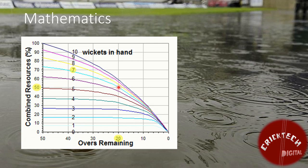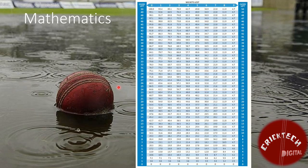The same equation is converted by a computer into a table of this sort for easier understanding of par score. In the second innings, team 2 must score one extra run than determined from the DLS method to win.